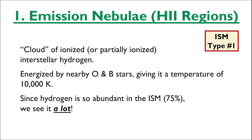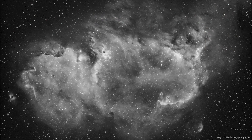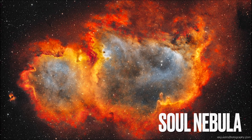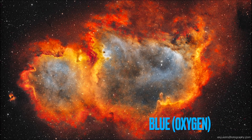Since a vast majority of the ISM, about 75%, is hydrogen, we see it a lot. In the visible spectrum, we see light predominantly from the H-alpha Balmer line at 656 nanometers, so these nebulae primarily appear red. This image of the Sol nebula in the constellation Cassiopeia is actually a composite image from three separate emission wavelengths: red from hydrogen, yellow from sulfur, and blue from oxygen.